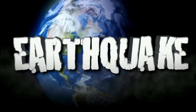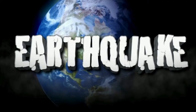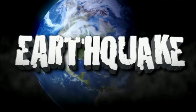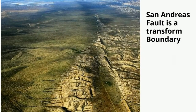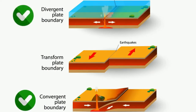Unlike the other types of boundaries, transform boundaries generally do not produce magma. The San Andreas Fault in California is a major transform boundary. So there we go — three types of plate boundaries: convergent, divergent, and transform.